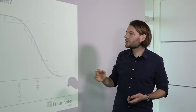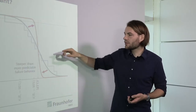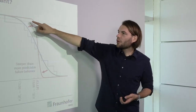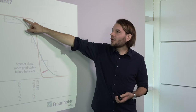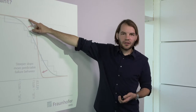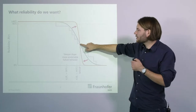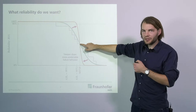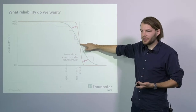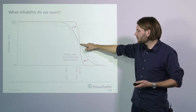It would be advantageous to have a steeper function where we have a longer period of high reliability and the 95% reliability timeframe is actually further out, without changing anything in the actual system or the actual mean time to failure.